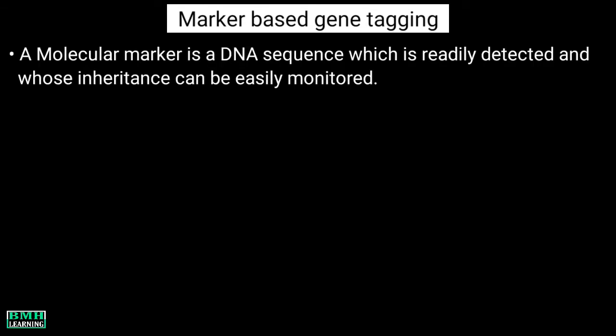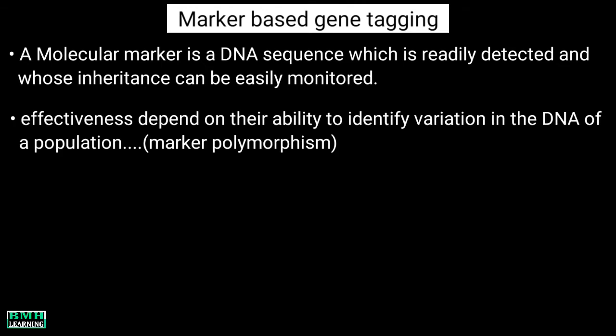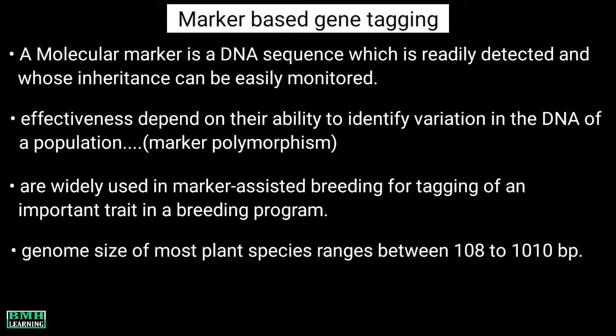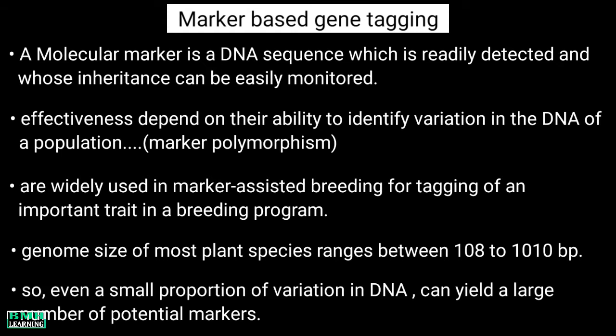Let's talk about marker-based gene tagging. A molecular marker is a DNA sequence which is readily detected and whose inheritance can be easily monitored. The effectiveness of molecular markers depends on their ability to identify variation in the DNA of a population. This is called marker polymorphism. Molecular markers are widely used in marker-assisted breeding for tagging of an important trait in a breeding program. The genome size of most plant species ranges between 10^8 to 10^10 base pairs, so even a small proportion of variation in DNA can yield a large number of potential markers.